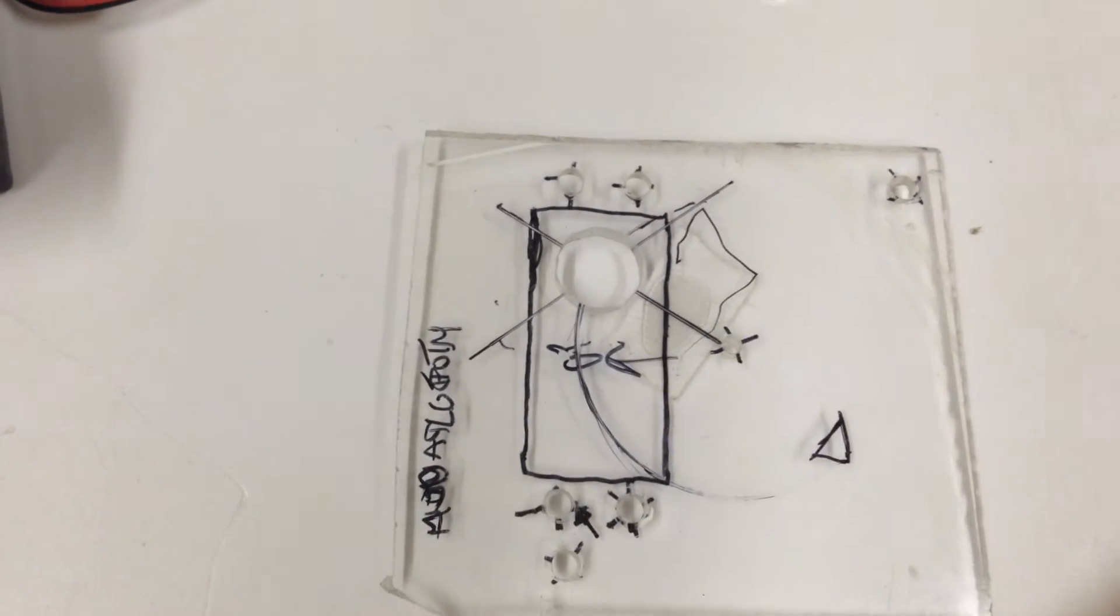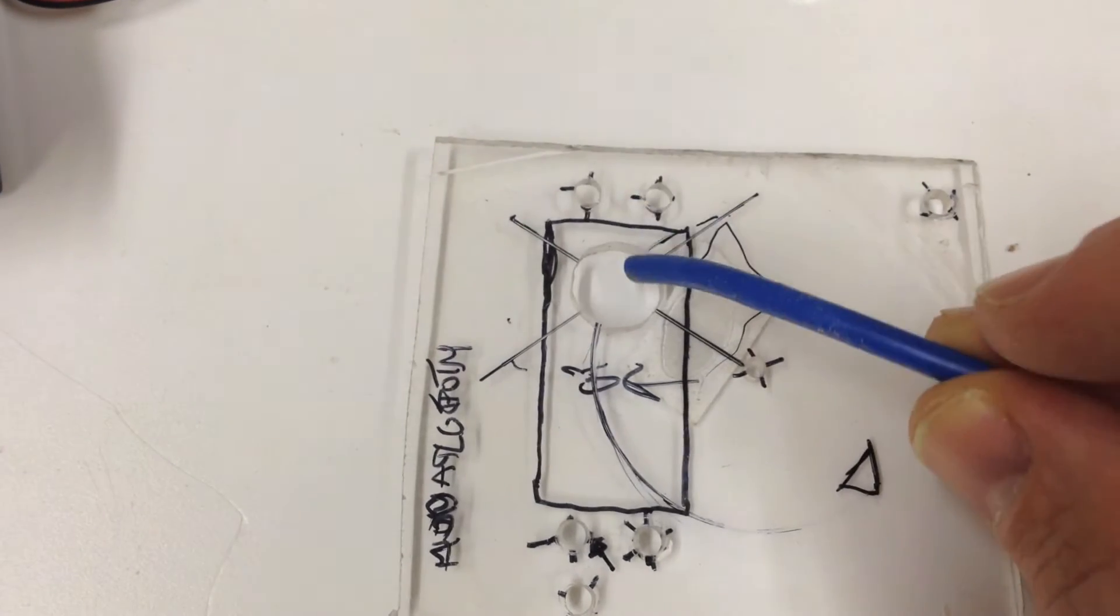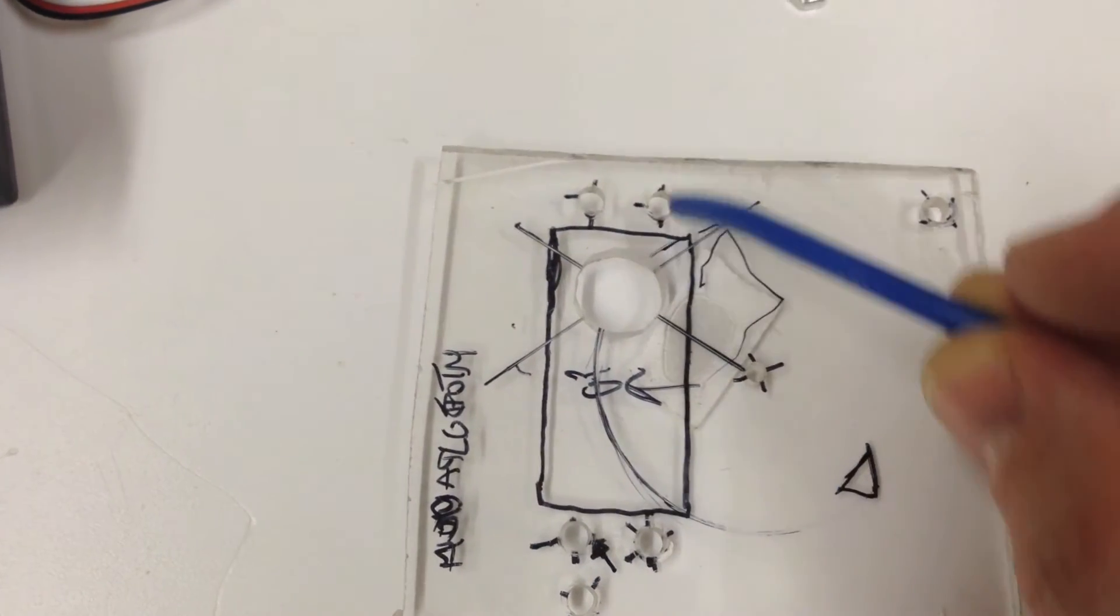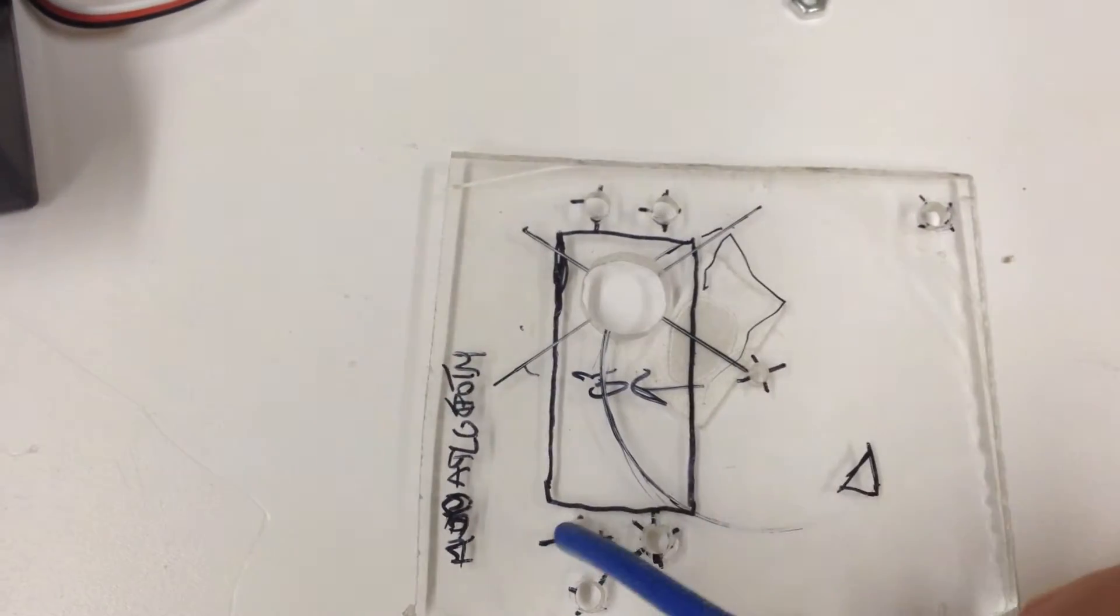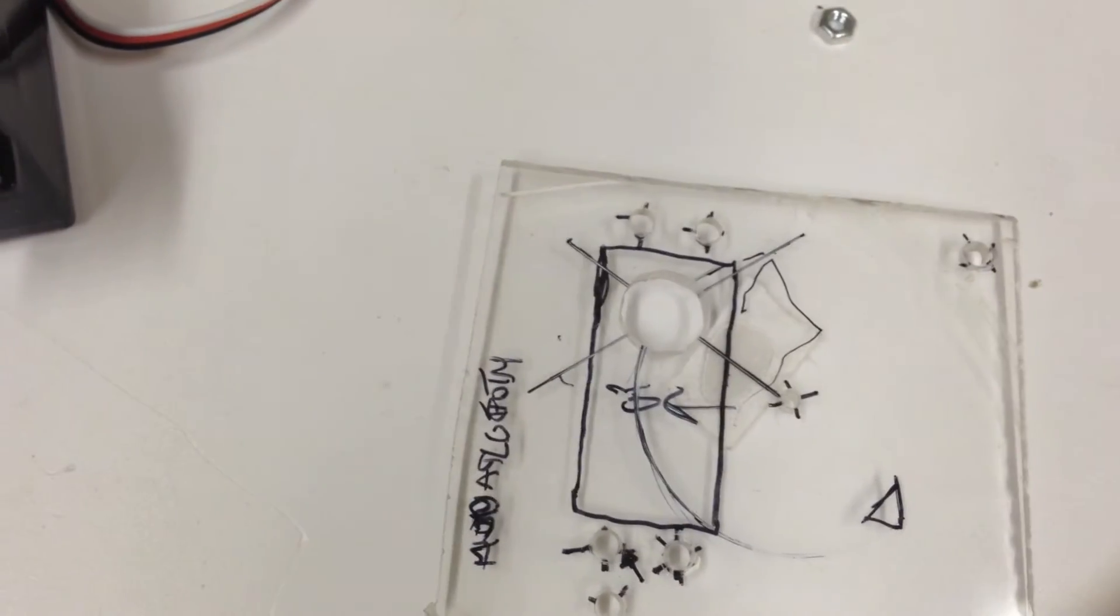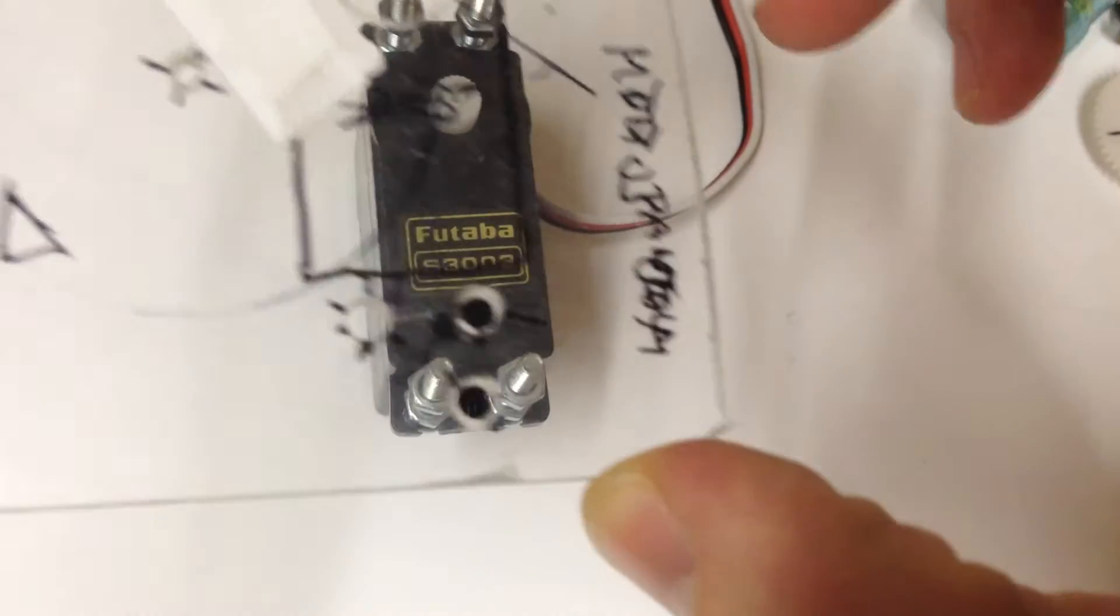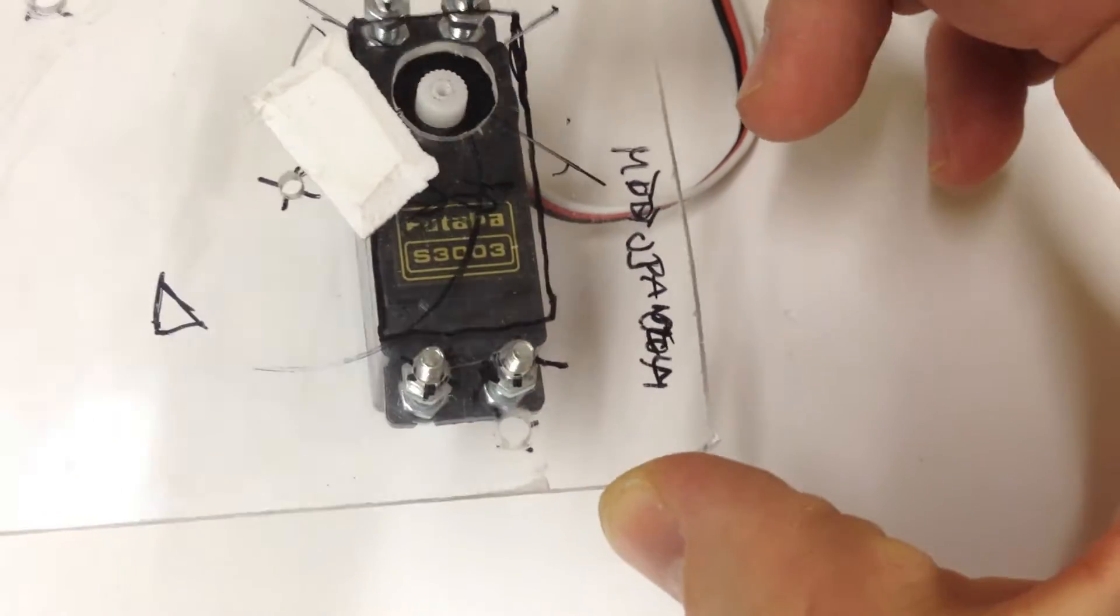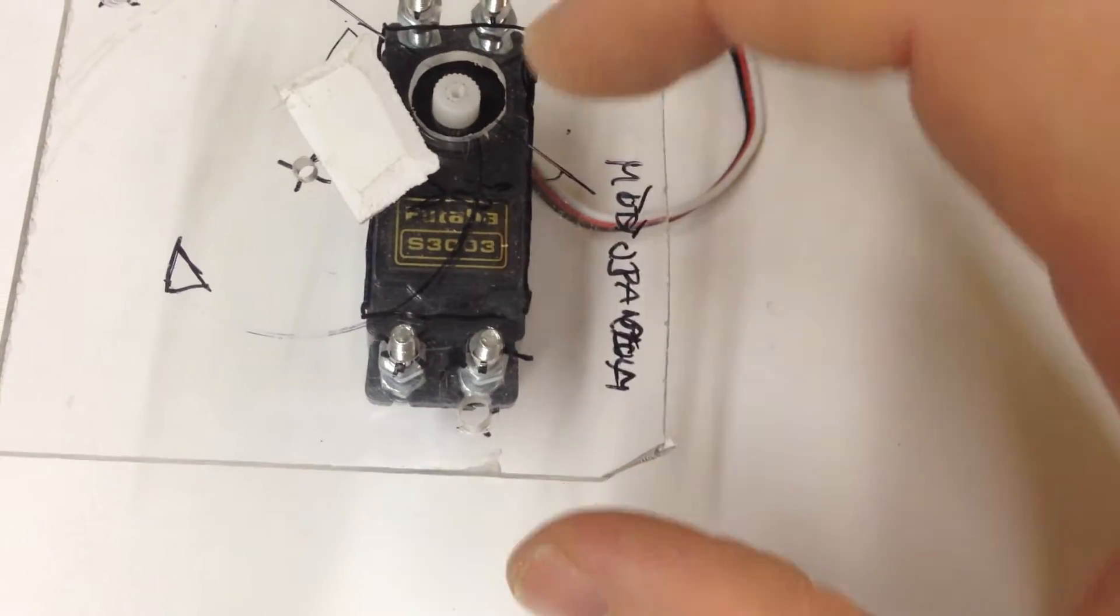Once you've figured out where to place the servo, I've made an outline of the servo here, then made four holes for mounting. And here a hole in the middle where the servo output is coming through. So then it's just a matter of taking this piece of plexiglass and put it on the servo there ready to mount.